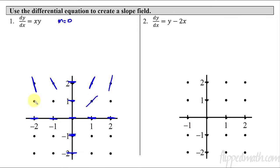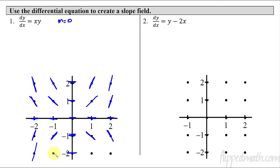Negative two comma one: slope of negative two. Negative one comma one: slope of negative one. Two comma one: slope of two. Now down to the negatives — negative two comma negative one is a positive two. Negative one comma negative one is a positive one. One comma negative one: negative one. Two comma negative one: negative two. Negative two comma negative two: positive four. Negative one comma negative two: positive two. One comma negative two: negative two. And two comma negative two is negative four — so eyeballing it way up to that dot, that's a very steep slope.